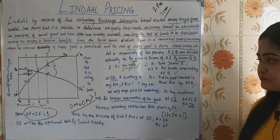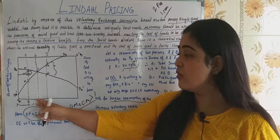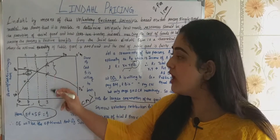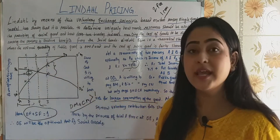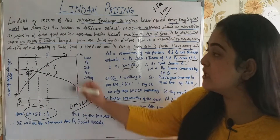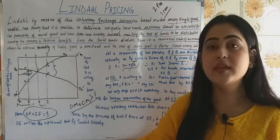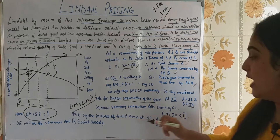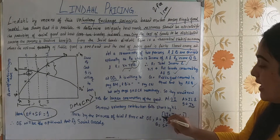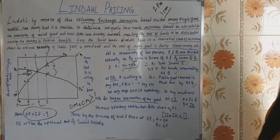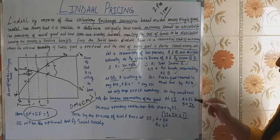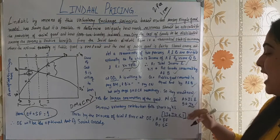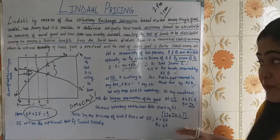But if we move to quantity OAI, A's willingness is only IL and B's willingness is JK. Here we see that the willingness to pay is falling short — IL plus JK is less than the cost. A is willing to pay IL, B is willing to pay JK, and that is falling short. So by trial and error, we will increase or decrease the supply of the commodity.